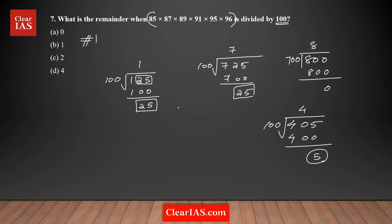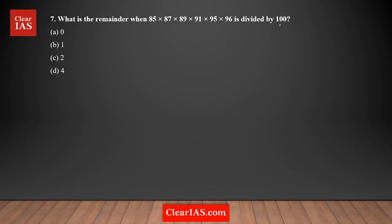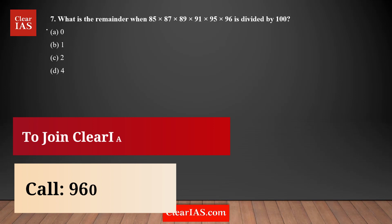In these examples, 25 is the remainder, then 25 again. For 800 it's zero because the last two digits are zero — it's a multiple of 100. For 405, the second-last digit is 0 and the unit digit is 5. So when dividing by 100, just analyze the last two digits. Now let's look at the answer choices for this problem.